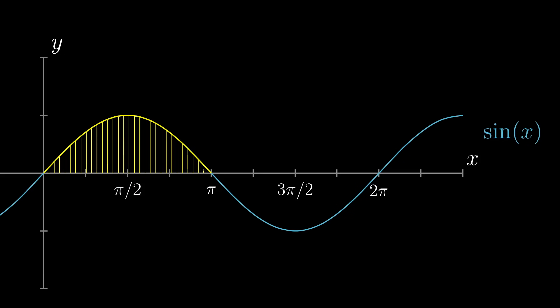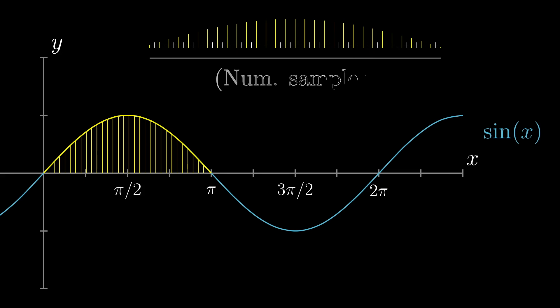In this case, imagine sampling a finite number of points evenly spaced along this range. Since it's a finite sample, you can find the average by just adding up all of the heights, sine of x, at each one of these, and then dividing that sum by the number of points you sampled, right?